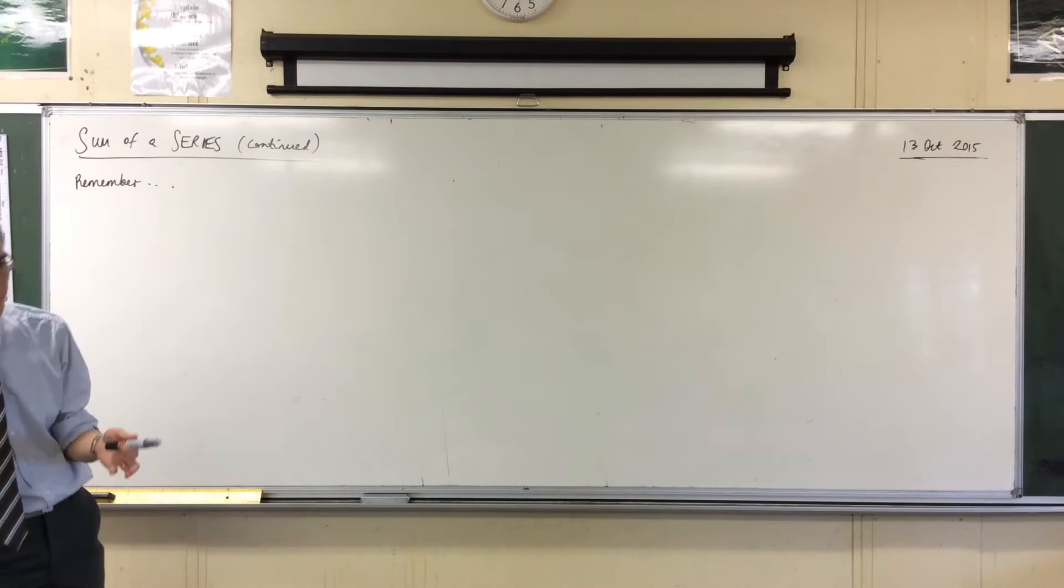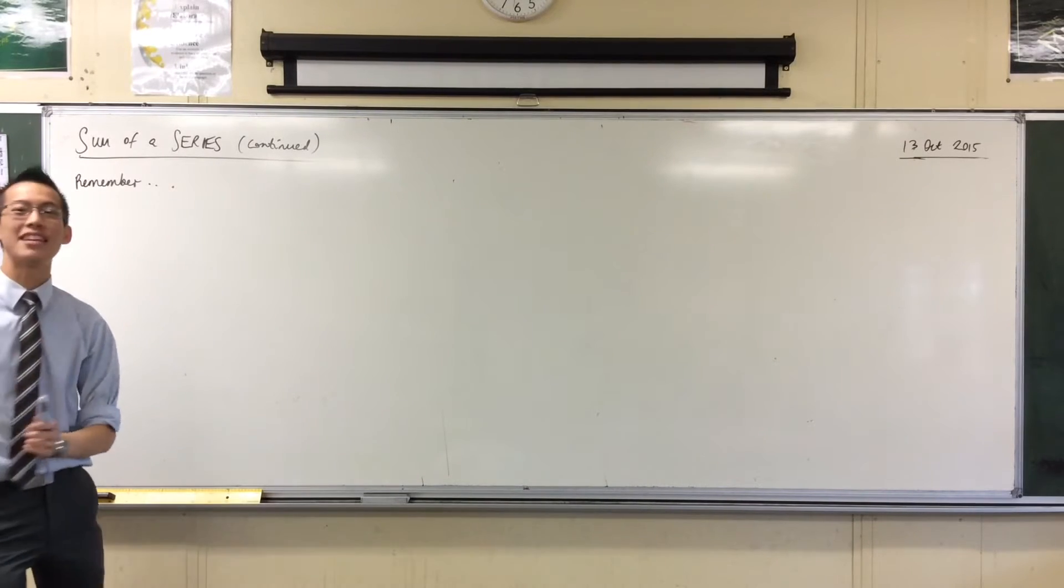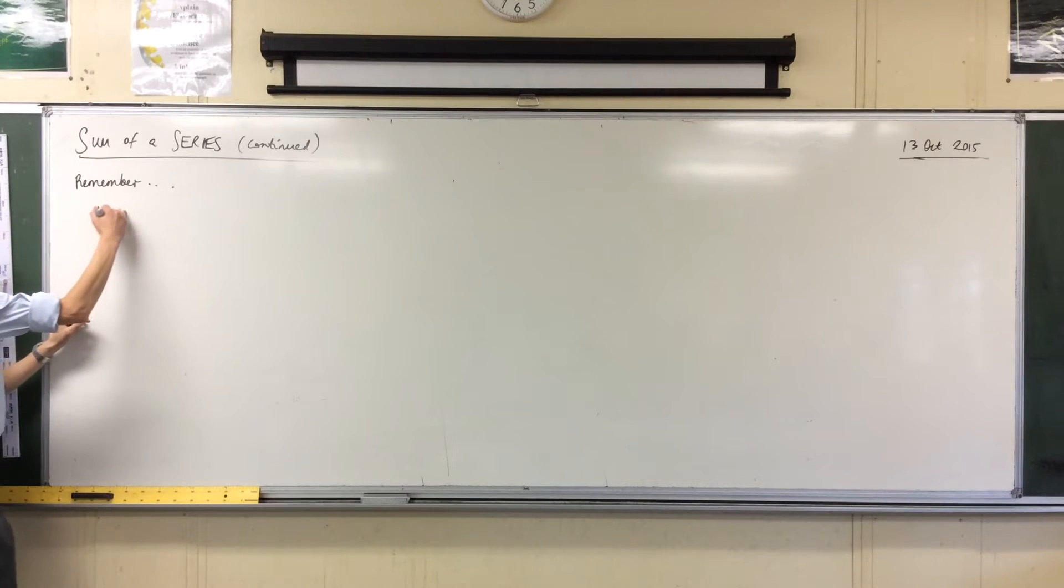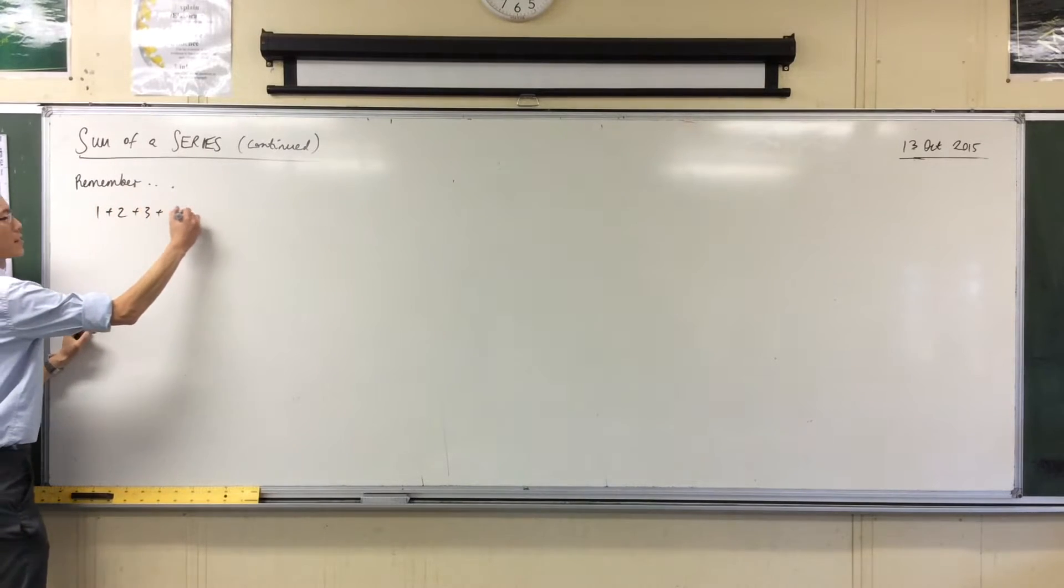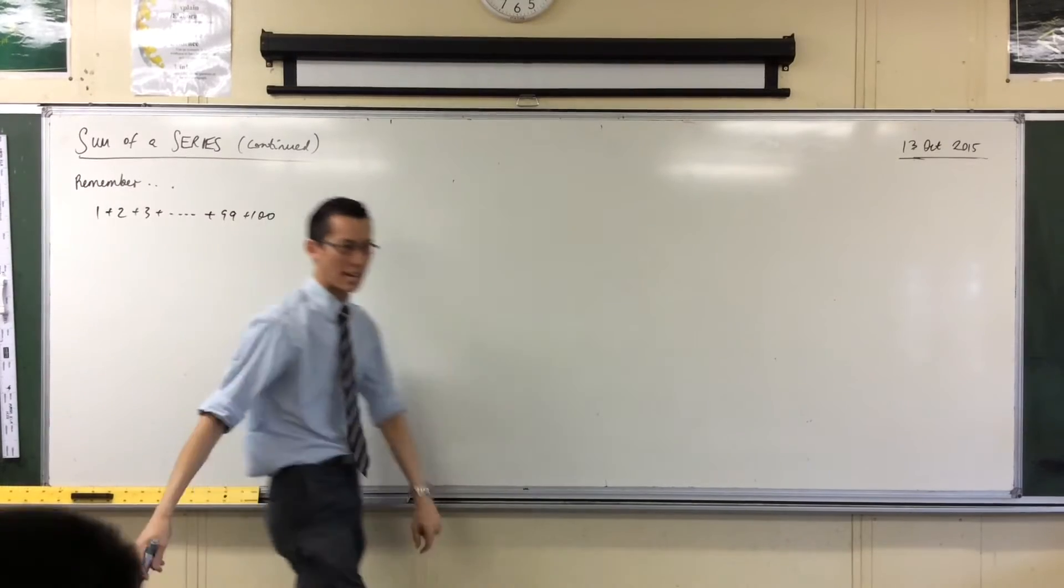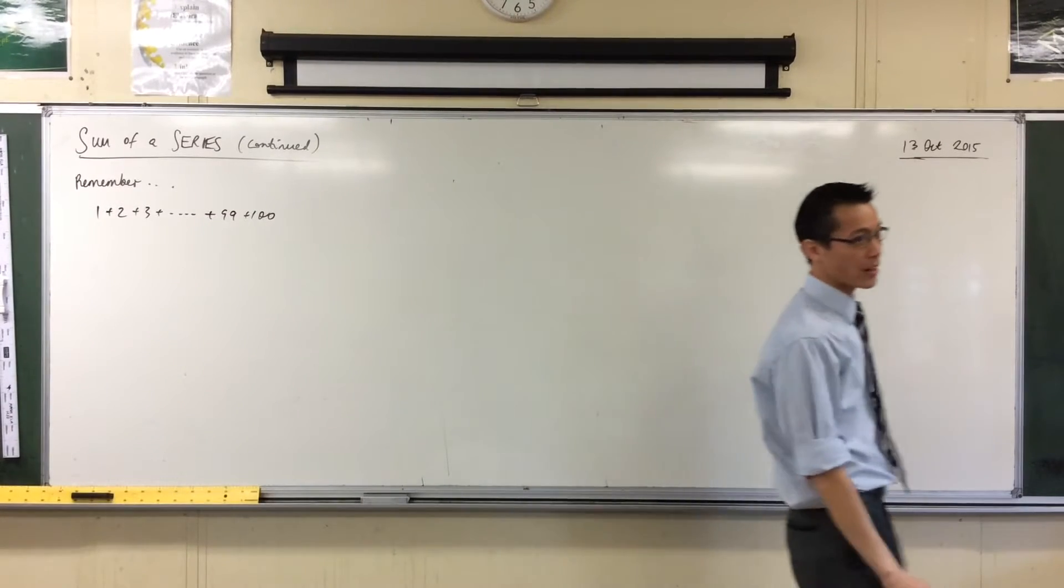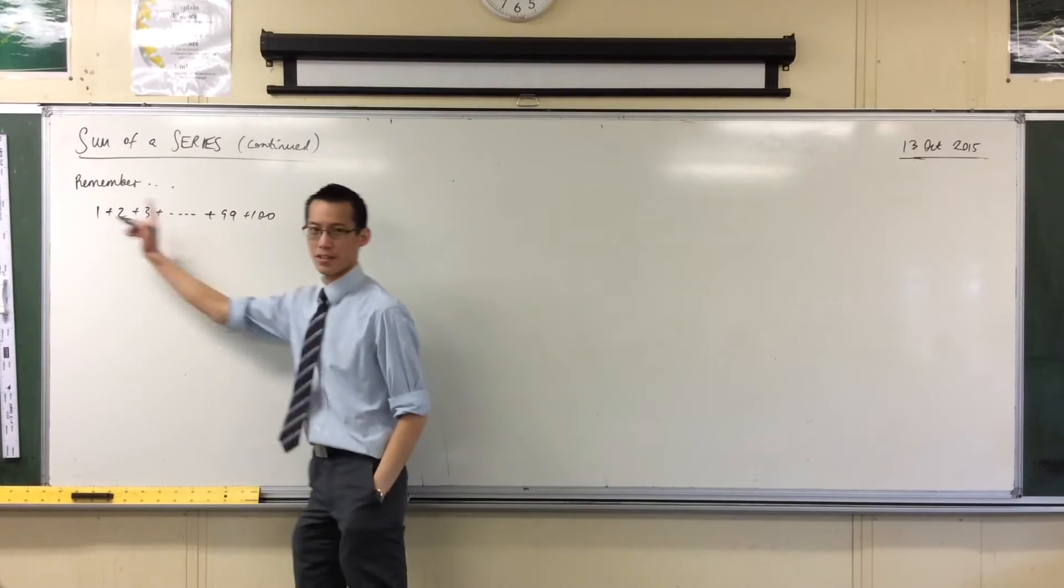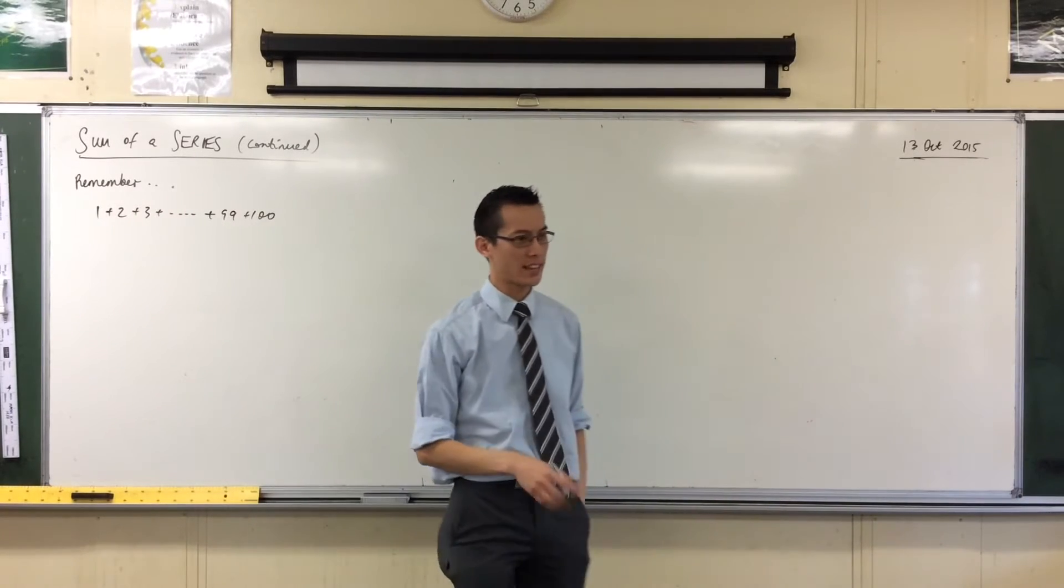We had the story, who was the main character in the story? It was Gauss and his lazy teacher. And he determined, okay, if I have this AP, it is relatively easy to work out what is going on. His method was to pair up the first and the last, the second and the second last, and so on.